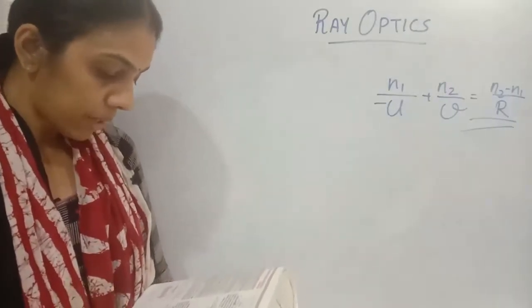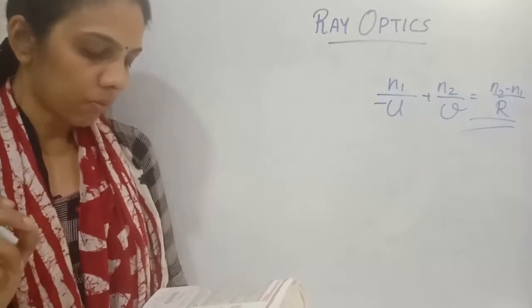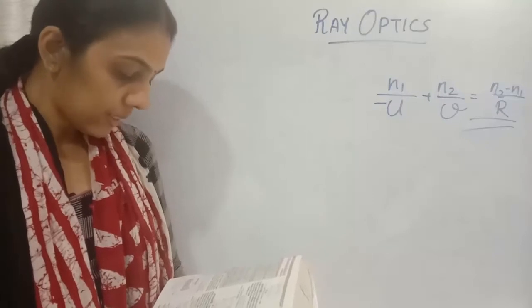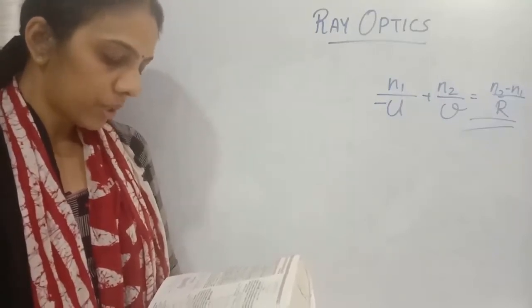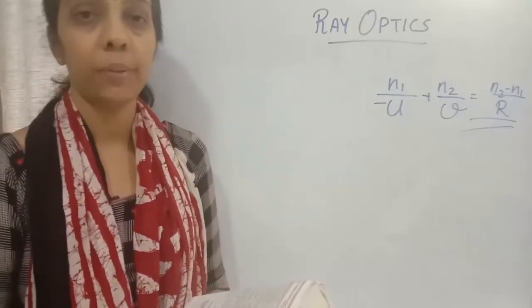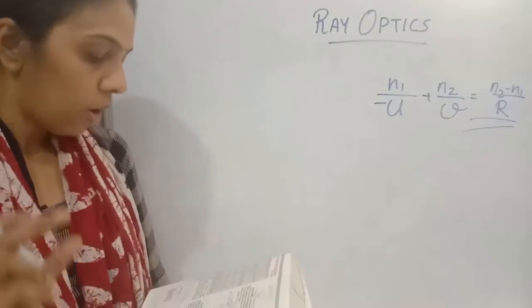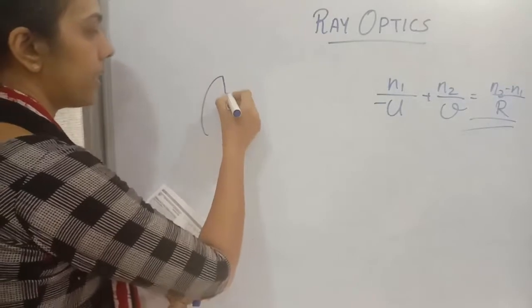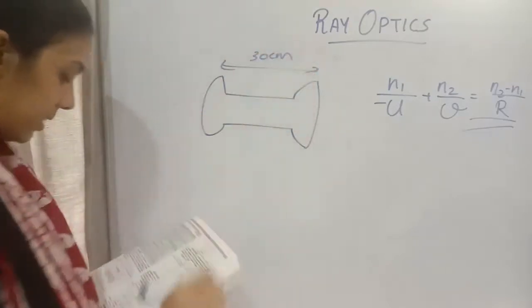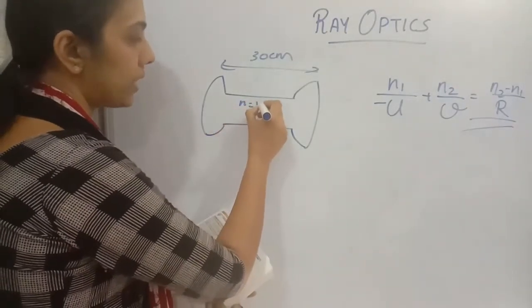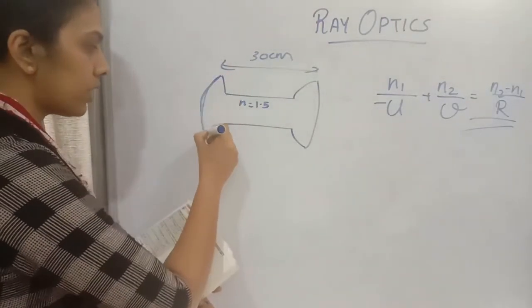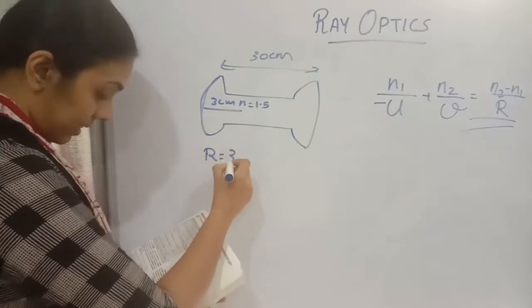The first question: a glass dumbbell of length 30 centimeters and refractive index 1.5 has ends with radius of curvature 3 centimeters. A point object is situated at a distance of 12 centimeters from one end of the dumbbell. Find the position of the image formed due to refraction at one end only. So r equals 3 centimeters and refractive index is 1.5.